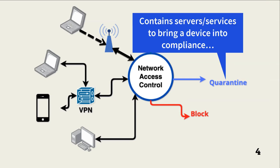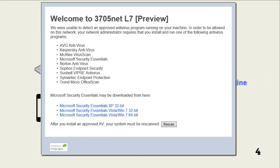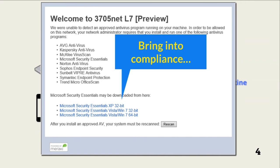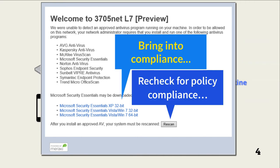The quarantine segment might contain servers that allow a user to install an approved anti-malware application, firewall, or current patches. This is an example of what is called a captive portal. A captive portal sends a user to a quarantined service that allows the user to bring her device into policy compliance. Once an endpoint completes remediation steps, it must once again attempt to pass NAC assessment.